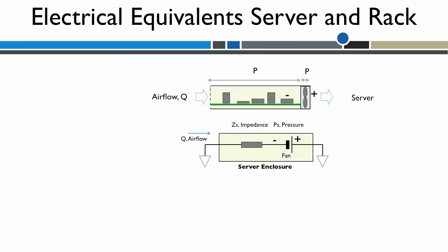We can represent this server by a simple electrical equivalent circuit with a battery and resistance. The battery represents the fan and the electrical resistance represents the internal air flow impedance. The current through the circuit represents the air flow through the box.